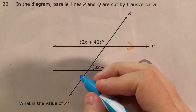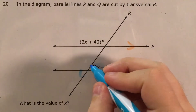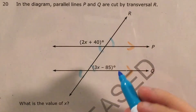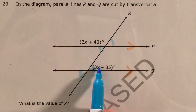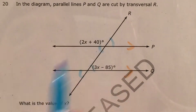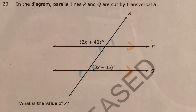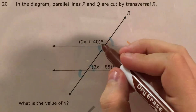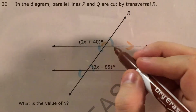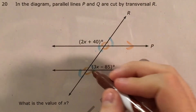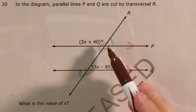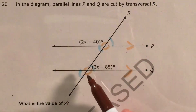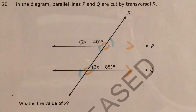That idea is: all of our small angles are going to be congruent — small angle, small angle, small angle, small angle, small angle, those are all congruent. And we're going to have some big angles that are all congruent as well — big angle, big angle, big angle, big angle, and big angle, all congruent.